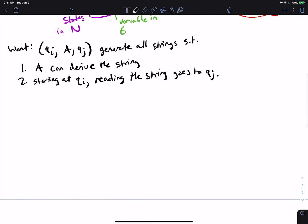Okay, so what are the variables? Formally, it's going to be Q cross V cross Q. The order doesn't actually matter here, by the way. As long as we capture the beginning and the end state, as well as one of the variables, that's what matters. So Q, of course, is going to be states in N and the V here is the variables of the original grammar G.